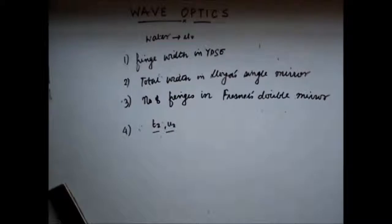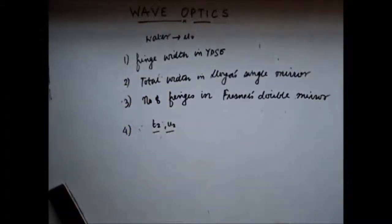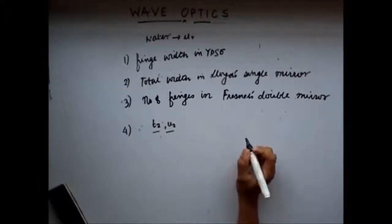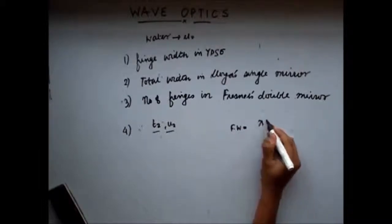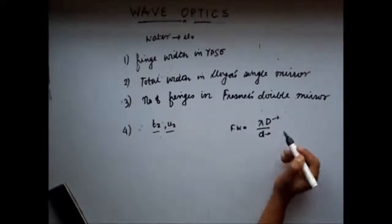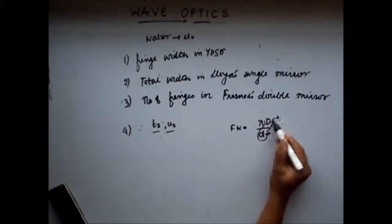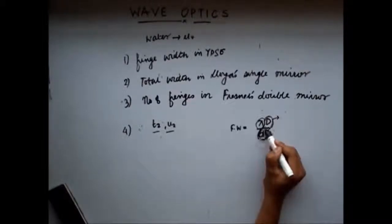If you have your concept correct, you will be able to solve all four questions easily. The fringe width in Young's double slit experiment is given by λ·D divided by d. The distances D and d are geometrical distances, so nothing happens to them when the setup is inserted in water. But here we have λ, which will change.